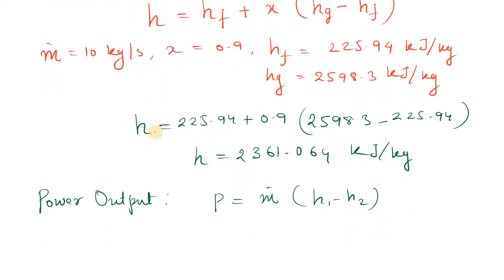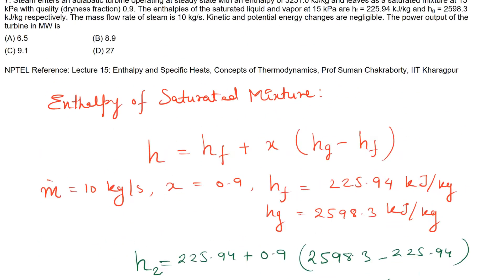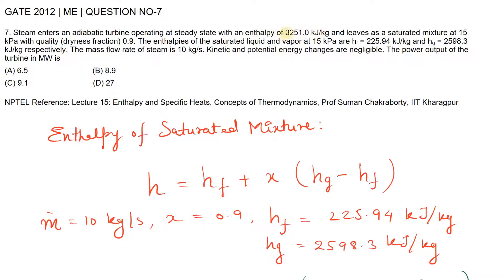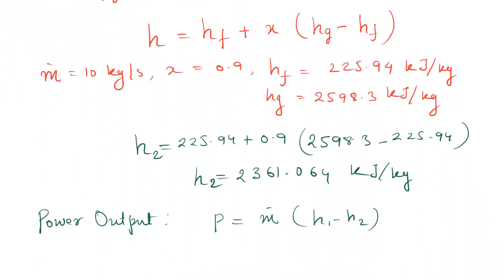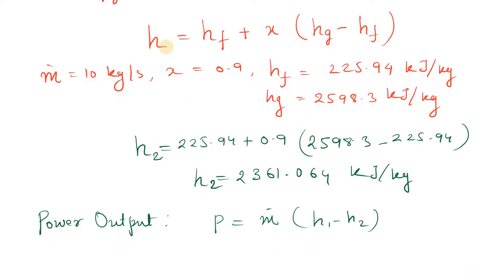H2 here is the enthalpy of mixture we just calculated. H1 is already mentioned in the problem, this is 3251. It is already operating at this specific enthalpy. This is H2 we have found from this equation.